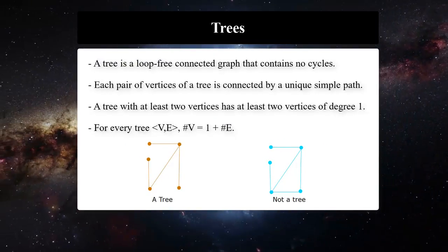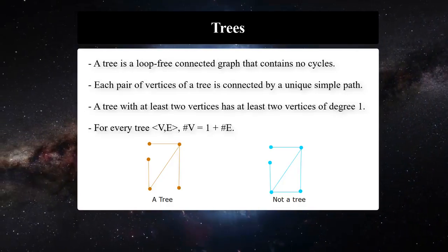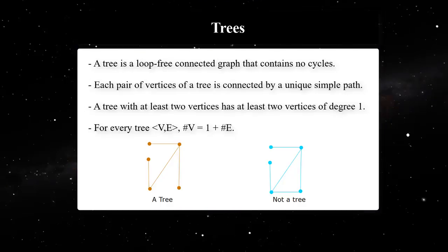A tree is a connected graph without any cycle, or equivalently, a tree is a connected acyclic graph.